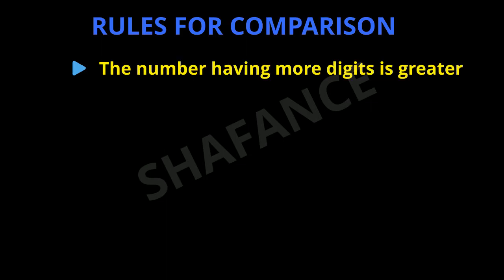Let us take an example. The first number is 1002 and the second number is 4. The number which has more digits is the first one — 1002 has 4 digits and number 4 has only 1 digit. So 1002 is greater than number 4. We use the greater than sign, and the end which is open is pointing toward the greater number.